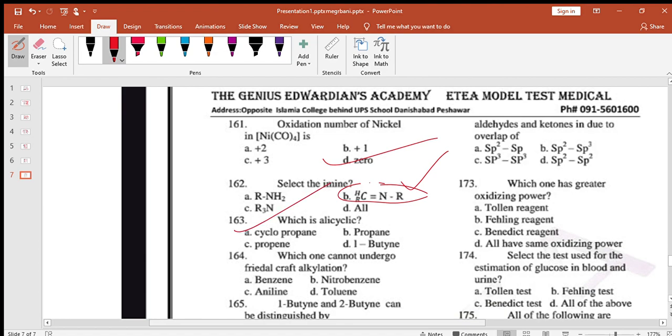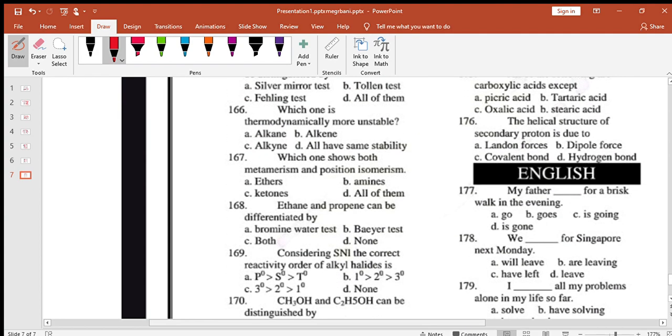Which one cannot undergo Friedel-Crafts re-alkylation? Aniline doesn't do it because it becomes salt. Butane and 2-butane: this is terminal and non-terminal. Which test for them is correct? Tollens test. Which one is thermodynamically more unstable? Alkane, because it is only single bond. Which one shows both metamerism and position isomerism?